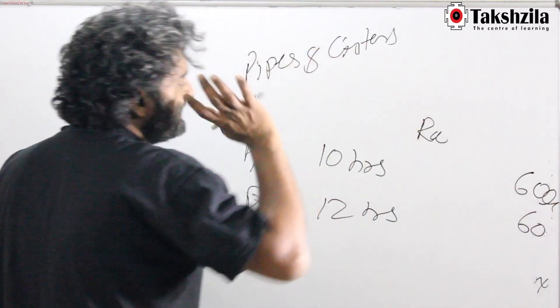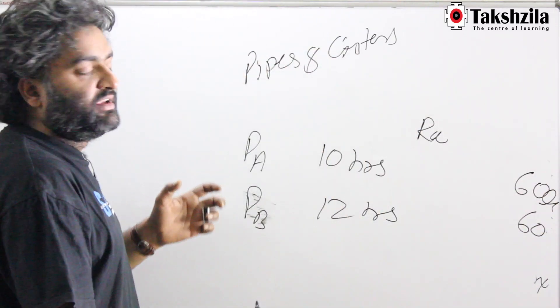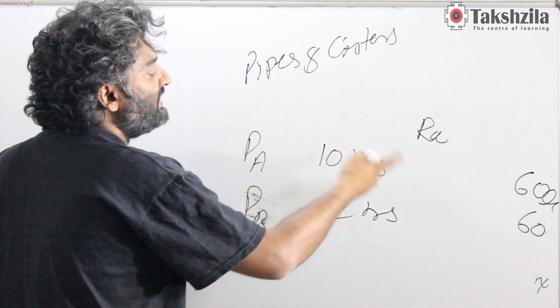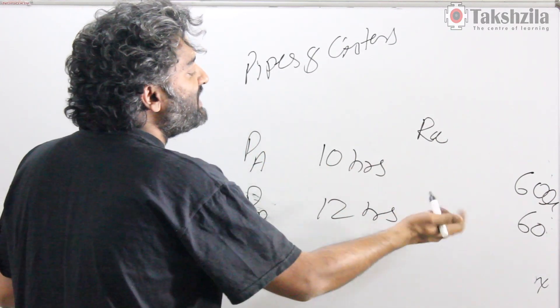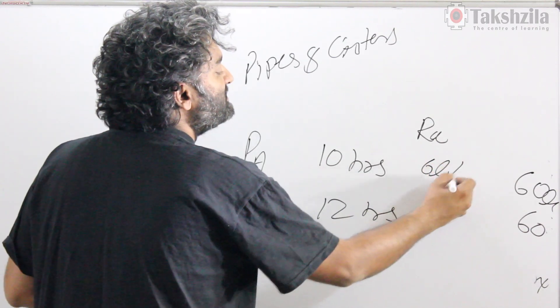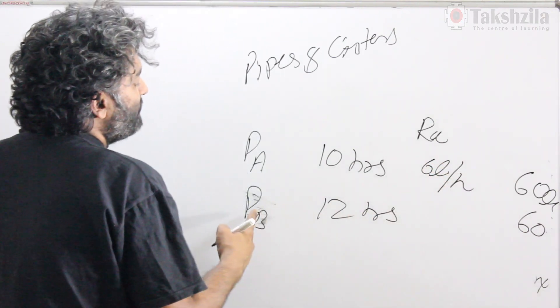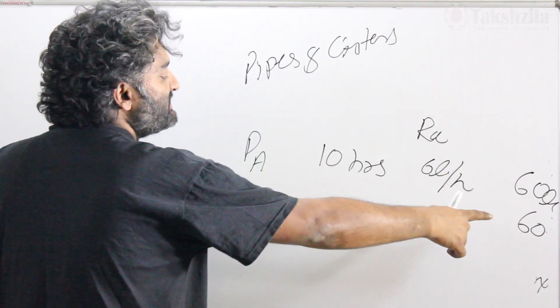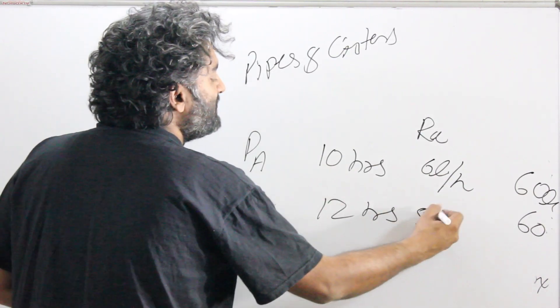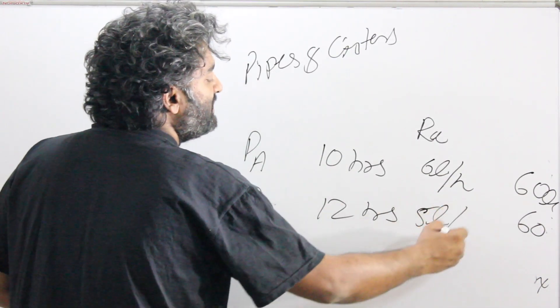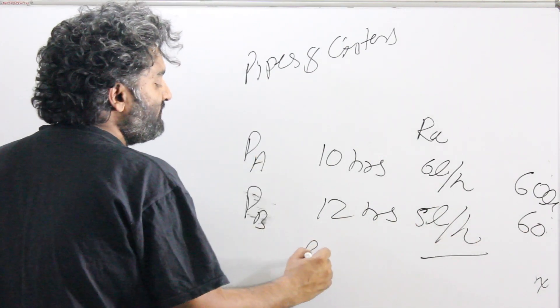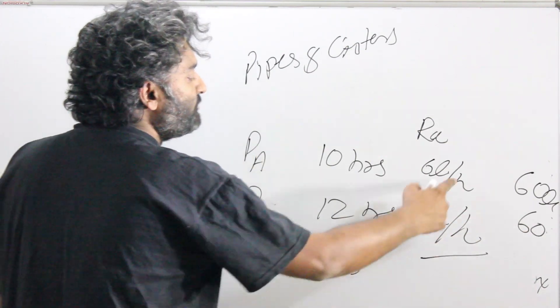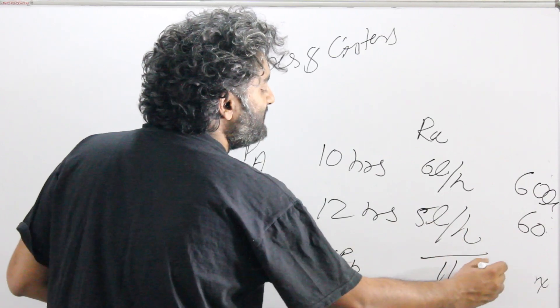Alternatively, I'll take the LCM method only. I know the LCM for 10 and 12 is 60. Let's think of the tank as being 60 liters big. This tank is filling an empty tank in 10 hours. That means how many liters per hour being put? 6 liters per hour is being put. And for tank B, when we do 60 liters, 5 liters per hour.